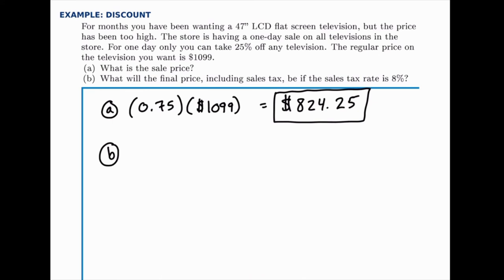So if we want to find 108%, that's the same as 1.08 times the discounted price. So we just need to calculate 1.08 times $824.25.